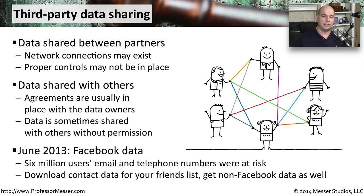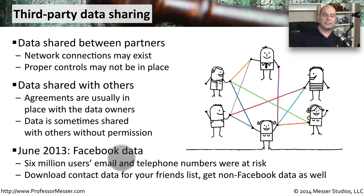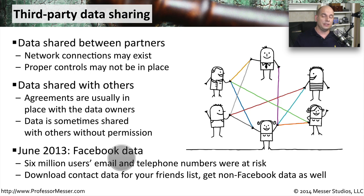Sometimes data is shared with others accidentally. This happened when Facebook announced in 2013 that for the past year, information was made available for over 6 million users that was beyond the scope of what those users wanted to share. There was email and telephone numbers and other information that were at risk. This accidental data sharing occurred because of a feature in Facebook that allowed you to download your friends list and have that list local on your computer. What many people didn't realize is that behind the scenes, Facebook was going to third-party databases and getting email addresses and phone numbers that were also associated with you, even though you didn't explicitly provide that information to Facebook.